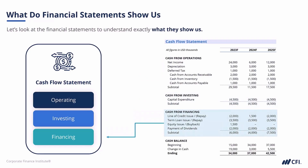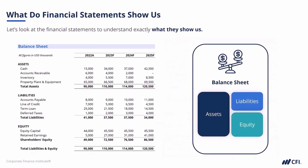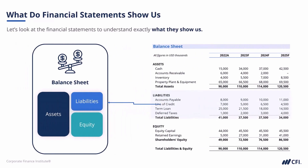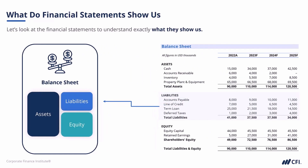Cash flow statements also give us a nice summary at the bottom, where we see the beginning cash balance, the change in cash through the period, and finally the ending cash balance. Similarly, a balance sheet would show us current assets, long-term assets, current liabilities, and long-term liabilities. Finally, the balance sheet will also show us the shareholder's equity and the retained earnings for the corporation. This is just meant to be a high-level review of the financial statements, covering some of the most common line items, understanding that there are more line items shown on these financial statements.